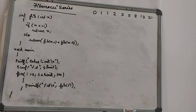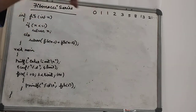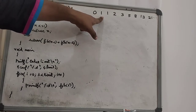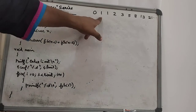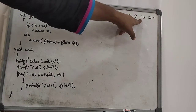Welcome students. Our next topic is the Fibonacci series. The Fibonacci series is a series of numbers. Starting from 0 and 1: 0 plus 1 is 1, 1 plus 1 is 2, 2 plus 1 is 3, 3 plus 2 is 5, 5 plus 3 is 8, 8 plus 5 is 13, 13 plus 8 is 21.